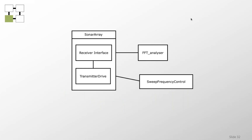We can also consider composition as a form of encapsulation — building modules from other modules. For example, a sonar array module: an FFT analyzer and frequency control clearly use the sonar array but have no idea there is a receiver interface and transmitter drive inside it. This is sometimes known as the facade pattern — a great way of providing an interface over a set of potentially unrelated components.